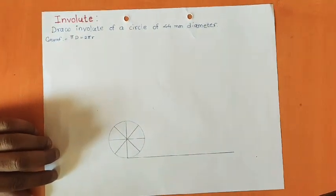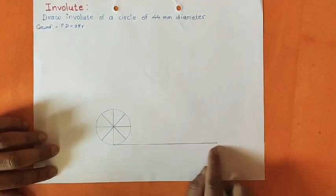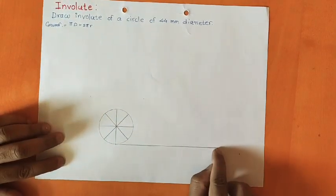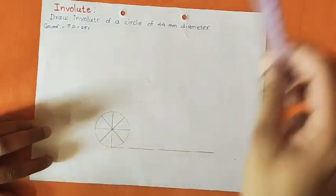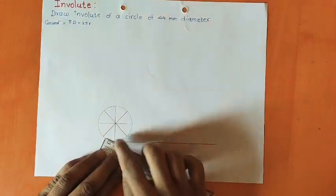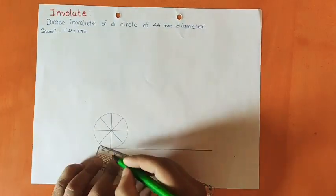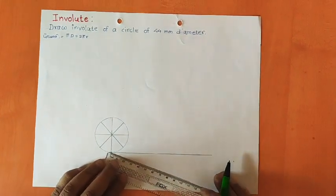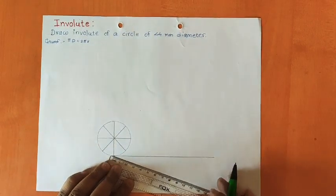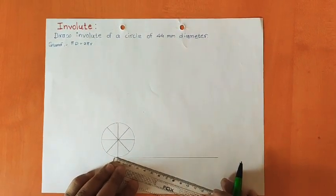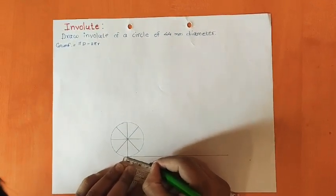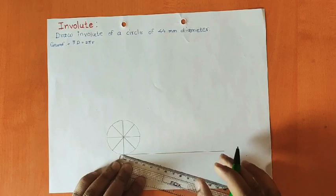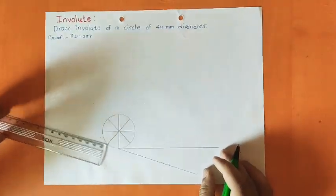Mark that π×d distance on the tangent line. Since we have divided the circle into 8 equal parts, we have to divide this π×d distance into 8 equal parts as well. To do that, draw an acute angle at one end of the line. Then take a constant distance — say 10mm — and mark 8 points along that angled line. Always remember: to remove parallax error from your drawing, your eyesight should be perpendicular to the scale.